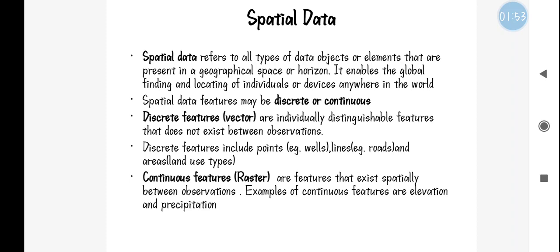Vector format means it is going to be a distinct element. The three elements of vector data are point, line, and polygon. To represent a point, you can take your house itself — your house is a point. Or, as in this example, a well is taken as a point.